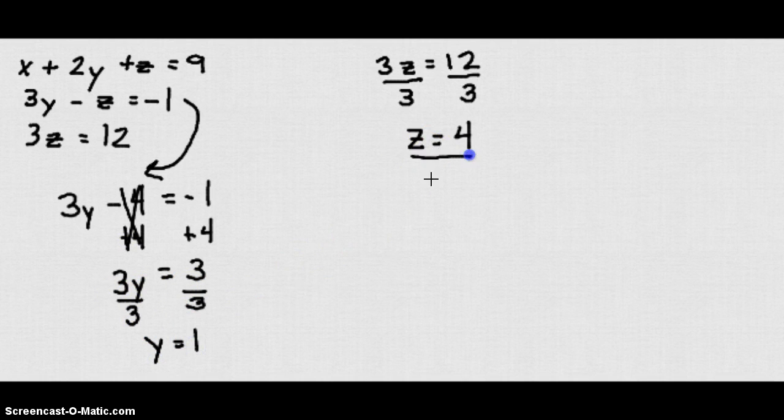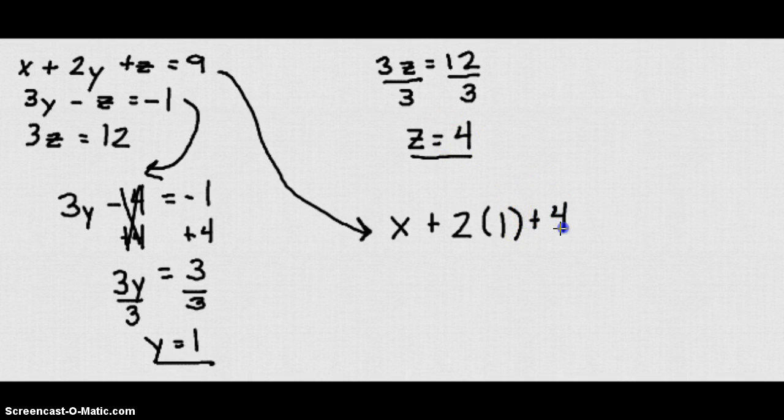Now we know z. We know y. All that's left to find is x. So let's take that top equation. We have x plus 2y, so 2 times 1, remember y is equal to 1, plus z, remember z is 4, is going to equal 9.